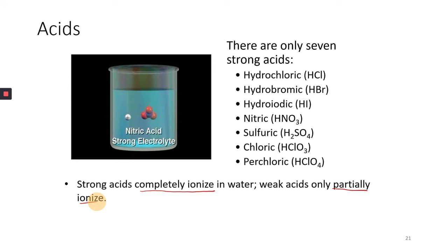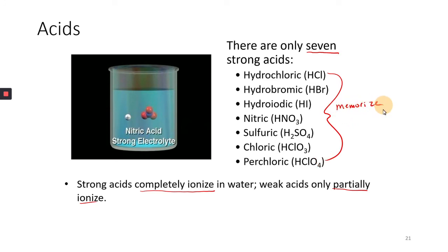Luckily, there are only seven acids that ionize completely — only seven strong acids, and they are listed here. It is highly recommended that you memorize these. You'll see later why it comes in handy when writing net ionic equations. In this diagram, nitric acid separates into H+ and NO3−, so it ionized completely.